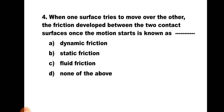Question number four: When one surface tries to move over the other, the friction developed between the two contact surfaces once the motion starts is known as — a) Dynamic friction, b) Static friction, c) Fluid friction, and d) None of the above. Until motion starts the frictional force is static friction, but once the limiting frictional force is attained and the body is in limiting equilibrium, if the external force increases further the body moves, and the frictional force developed is known as dynamic friction. Hence the correct answer is a) Dynamic friction.